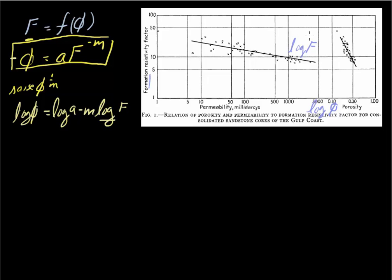So why not just solve directly for the log of F, which is more or less what we have over here? Archie plotted up a bunch of data points — the formation factor versus the porosity — and shows that we have a straight line on this log-log display with a negative slope. So let's go ahead and solve for the log of F.